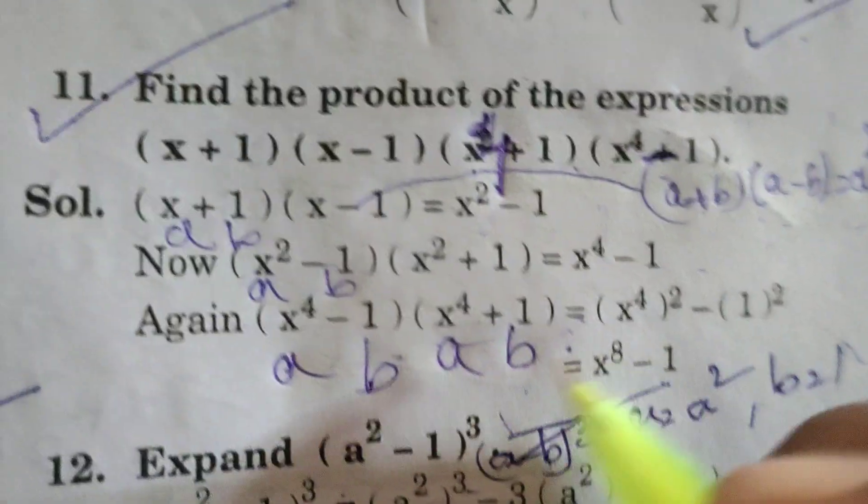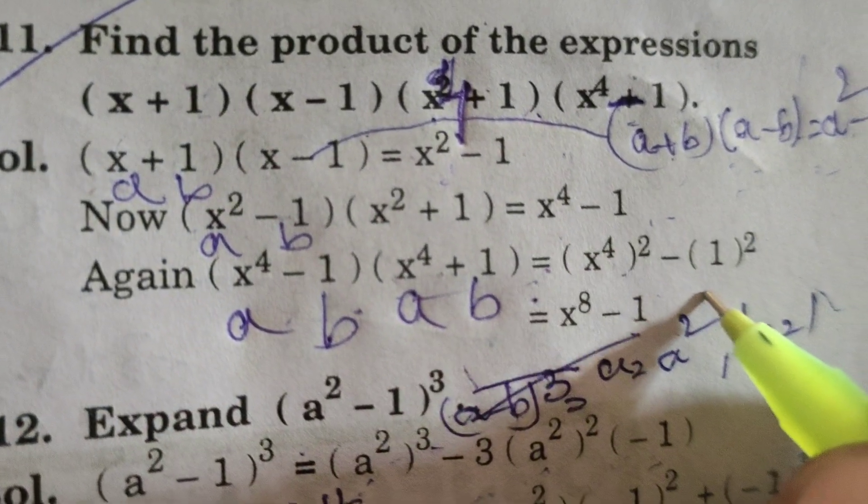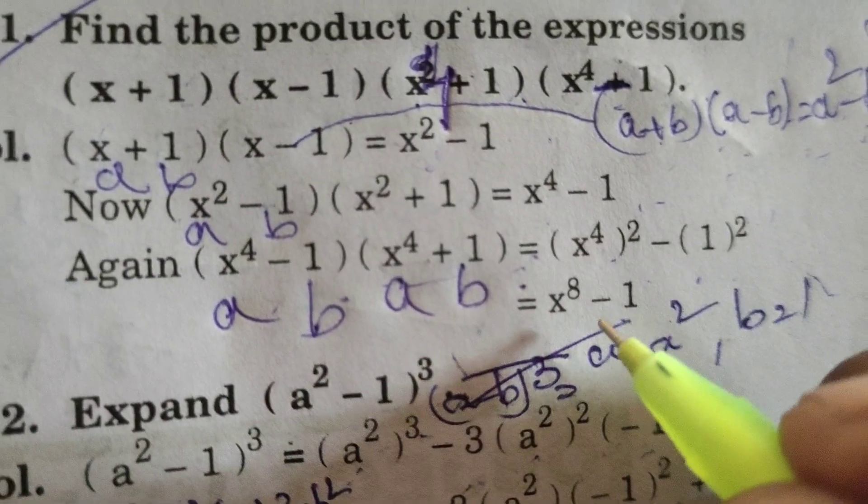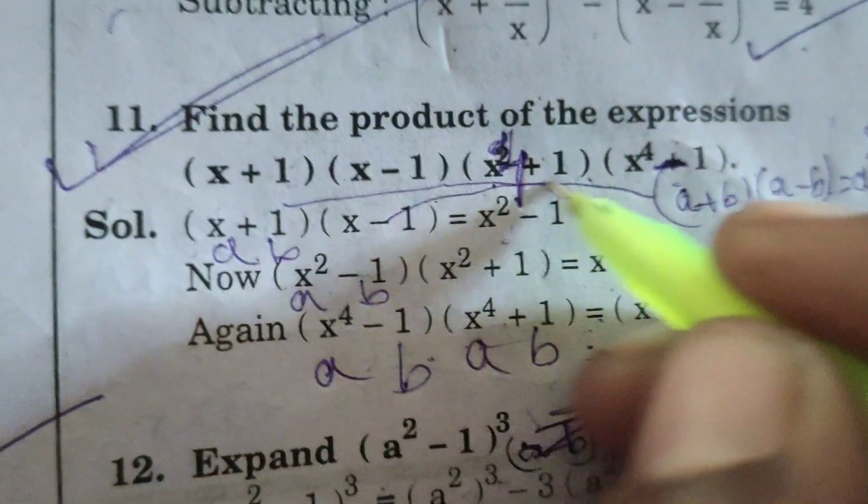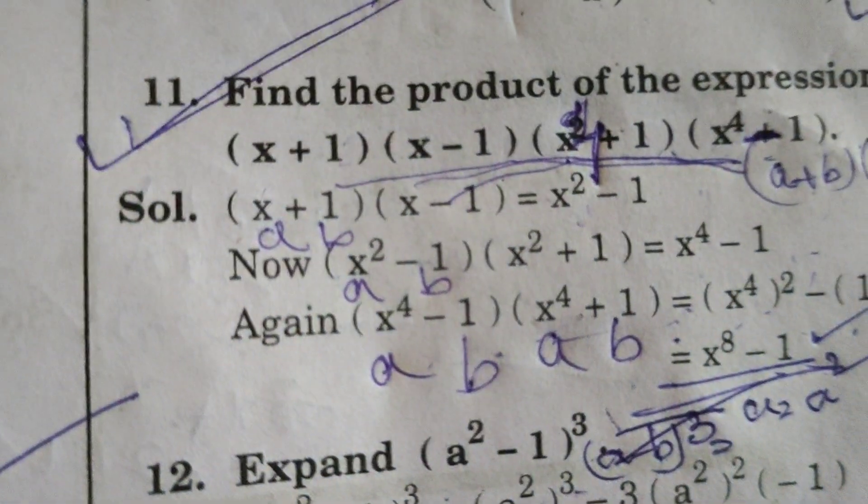a square minus b square means x power 4 whole square minus 1 square. That is x power 8 minus 1. This is the solution for this product of the given expression. Thank you.